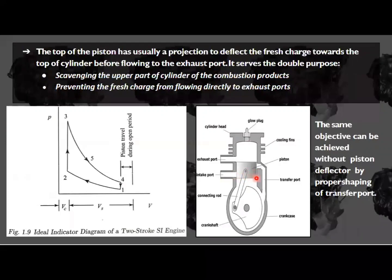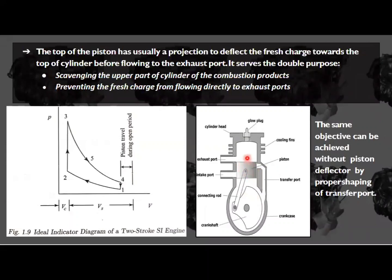Whenever the piston moves from bottom dead center to top dead center, there is an opening in the intake port. Whatever air or air-fuel mixture enters goes into the crankcase and is accommodated there. During the expansion stroke, when the piston travels from top dead center to bottom dead center, the transfer port opens. Once the transfer port opens, the air-fuel mixture or air enters the combustion chamber.